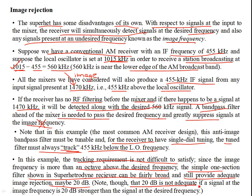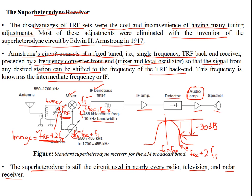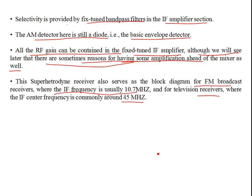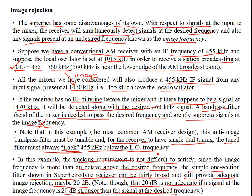Note that if 20 dB is not adequate and the signal at the image frequency is 20 dB higher or stronger than the signal at the desired frequency, that's a problem. If the strength of the image frequency is much higher and the response is not adequate to provide the necessary attenuation, then there's a problem. The center frequency should be tuned such that it tracks the lower end of the local oscillator frequency, so you don't have this problem with image frequencies.